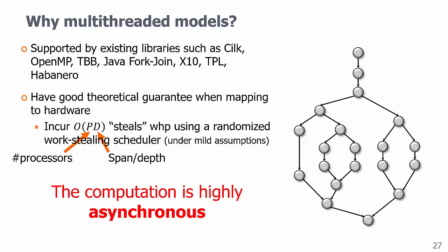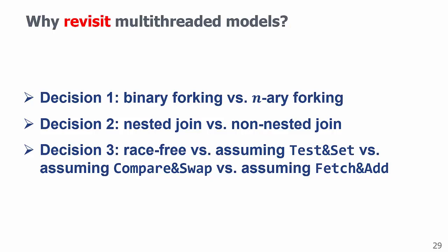As I mentioned, there are many variants of this model, based on a few decisions, like whether the forking is binary or arbitrary, nested or non-nested join,